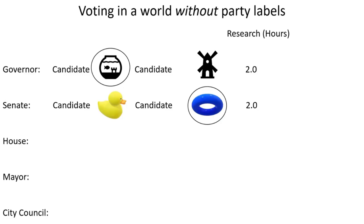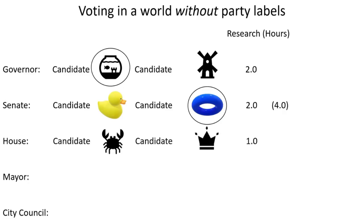Now it's time to vote for the house. Once again this is an independent decision. They've now put in four hours of research, but the candidates are Crab and Crown. They decide on another hour of research, because the research they did for the senate and the governor isn't going to help them — this is an independent decision. Now at five hours total, they decide to vote for candidate Crab.